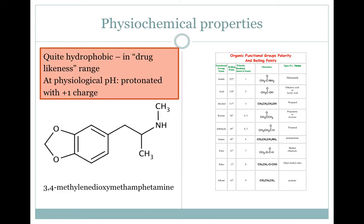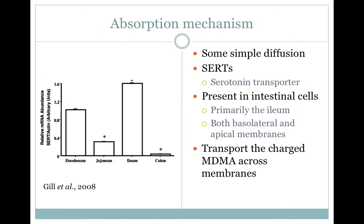The pKa for the strongest basic group is 10.14, giving the molecule a +1 charge at physiological pH. It is thought that MDMA is absorbed into cells by simple transcellular diffusion due to its hydrophobic nature, despite the +1 charge, as well as through the use of transporters. Serotonin transporters, called SERTs, have been shown to be expressed in the human intestine and can facilitate some of MDMA's passage across the enterocytes as well.